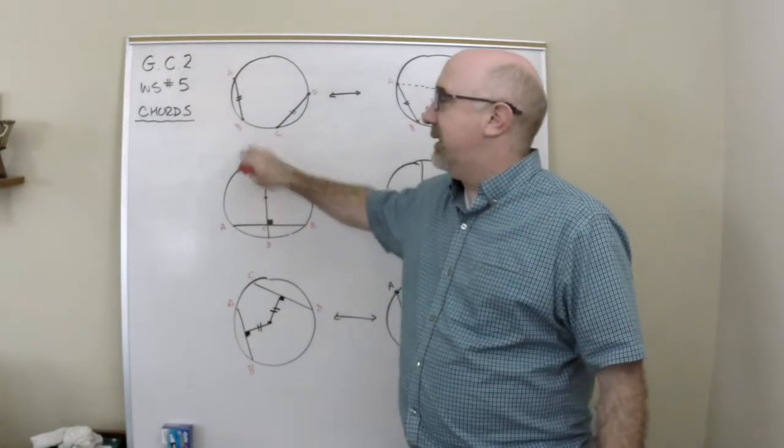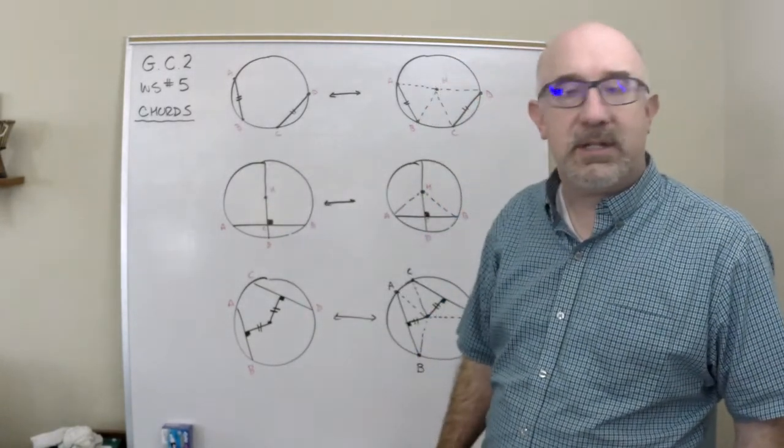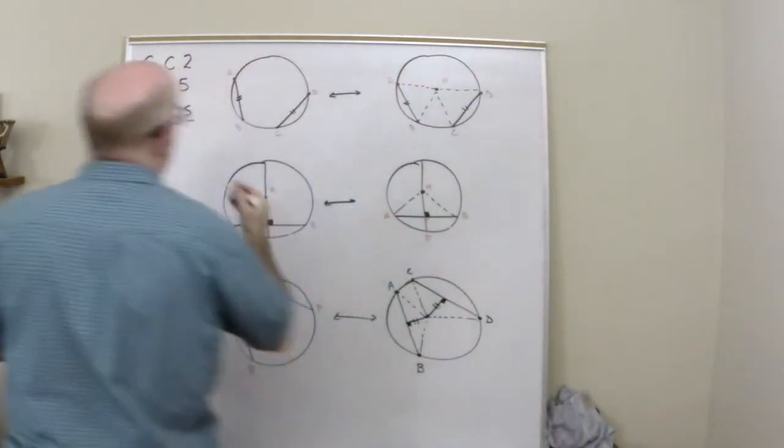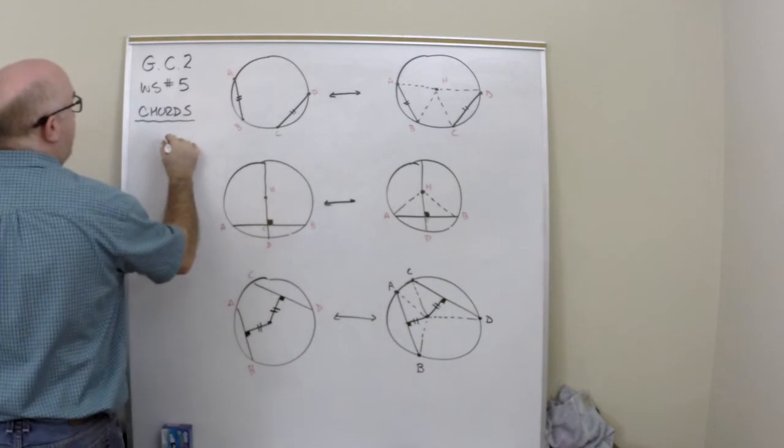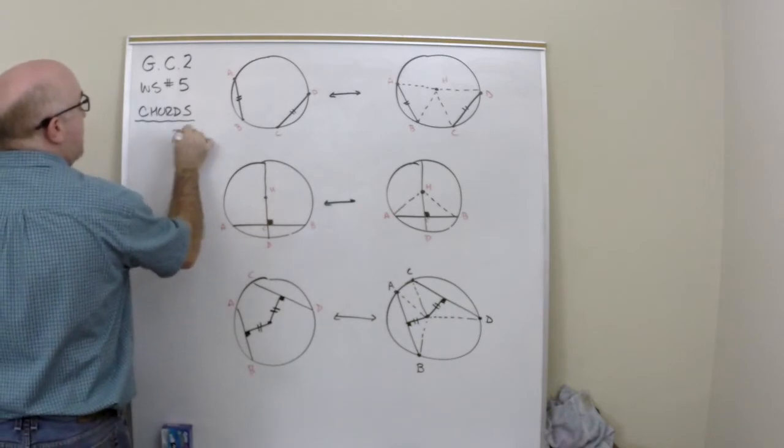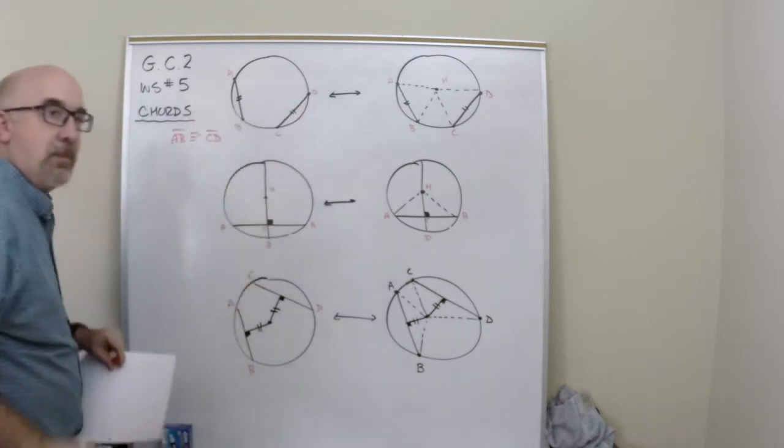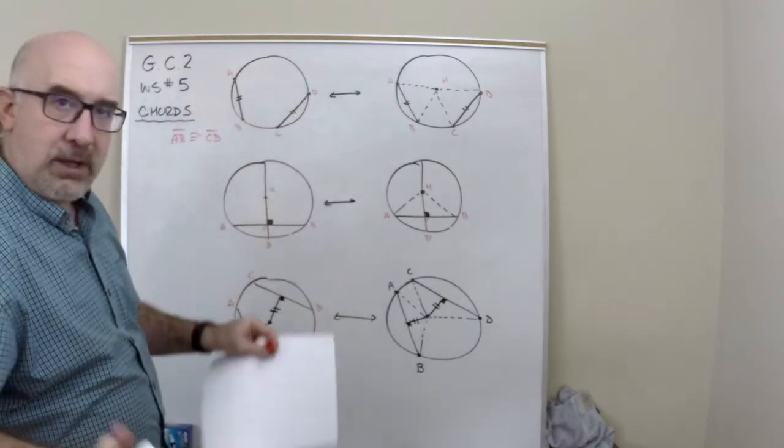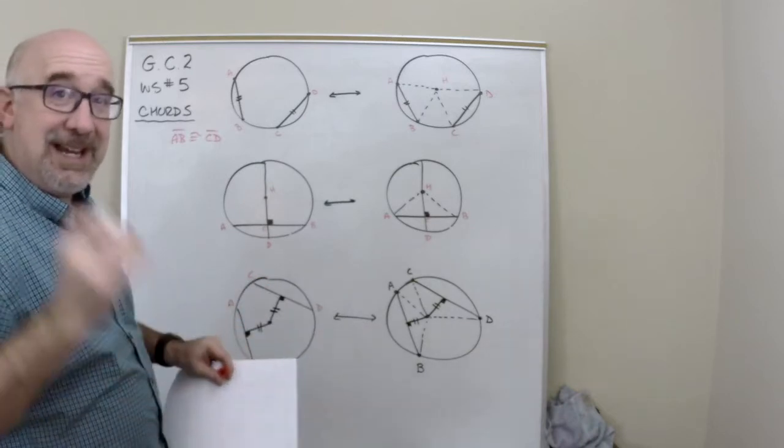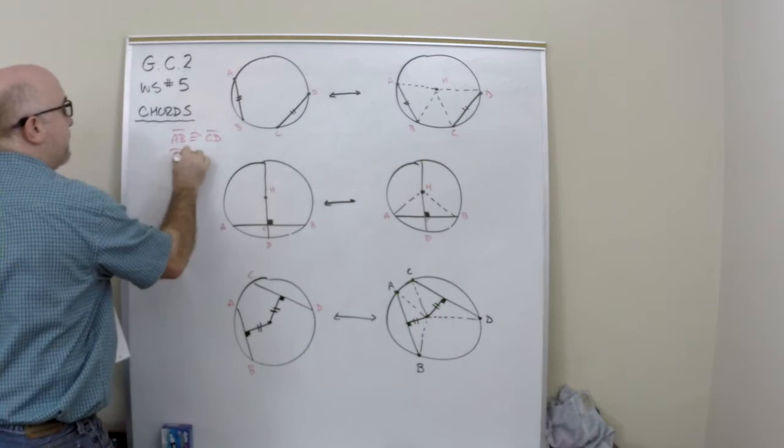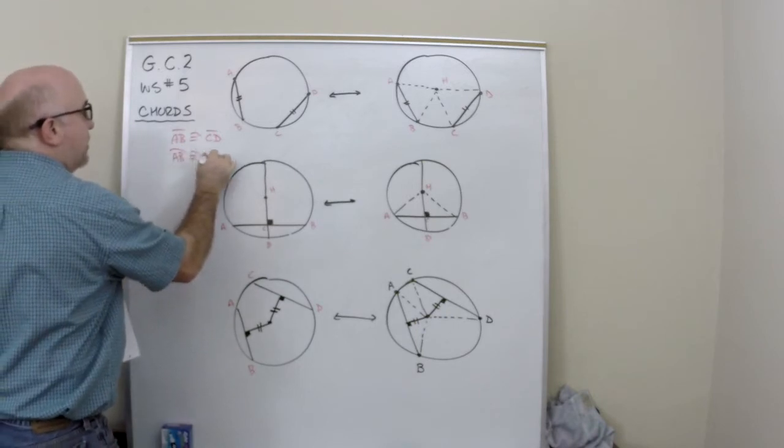So the first thing that we find out about chords is if two chords are equal, so if AB is congruent to CD, then the arc sitting underneath them is congruent as well. So arc AB would be congruent to arc CD.